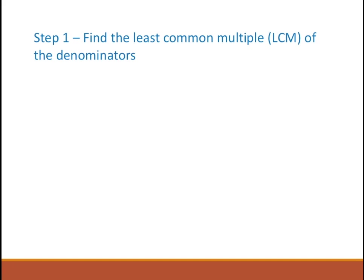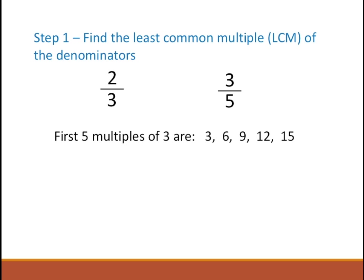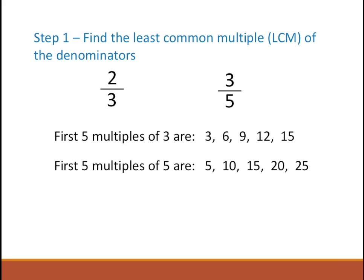First, we find the least common multiple of the denominators. So if we are given 2 by 3 and 3 by 5, we're going to find the LCM of the denominators 3 and 5. For that I'm going to choose the multiples method — there are many methods to find the LCM, so you can choose your own way. I've listed 5 multiples of 3 and another 5 multiples of 5, and the least common multiple between these two sets is 15. So the LCM is 15.